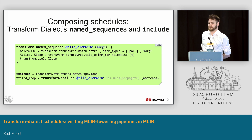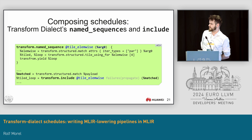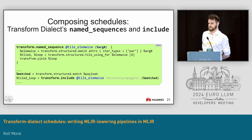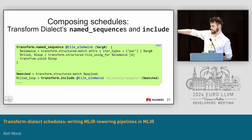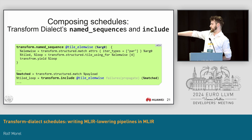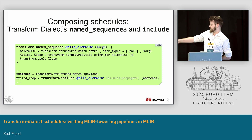Luckily, the transform dialect does provide some facility for composing schedules, with two ops: NamedSequence and Include. NamedSequence allows you to introduce functions and name them — for instance, TransformNamedSequence TileElementWise. It takes an argument and returns something. Then another sequence can make a call to TileElementWise through the Include op, providing an argument where you may have already done some matching. The failuresPropagate option is a detail to explore separately.